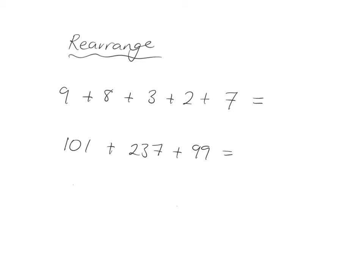But with addition, we can rearrange the order in which we do things to make it easier for ourselves. For example, we can notice 7 and 3 makes 10, 2 and 8 also makes 10, so we've got 10, 20, 29—nice and easy. Similarly, if we had 101 plus 237 plus 99, we can rearrange the order in which we do things. 101 plus 99—that's easy, it's 200—and 200 plus 237 is 437.